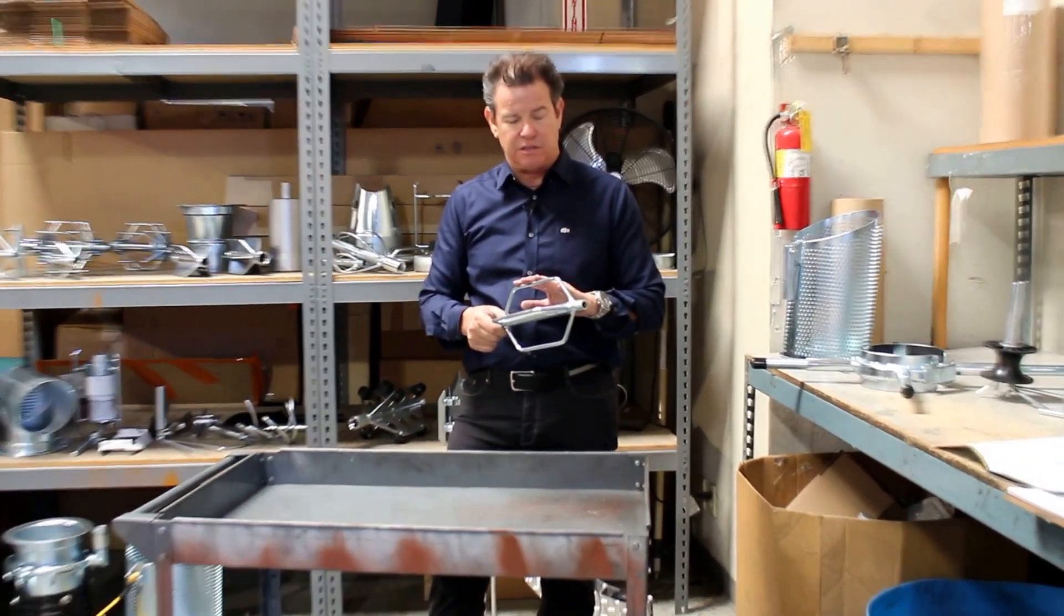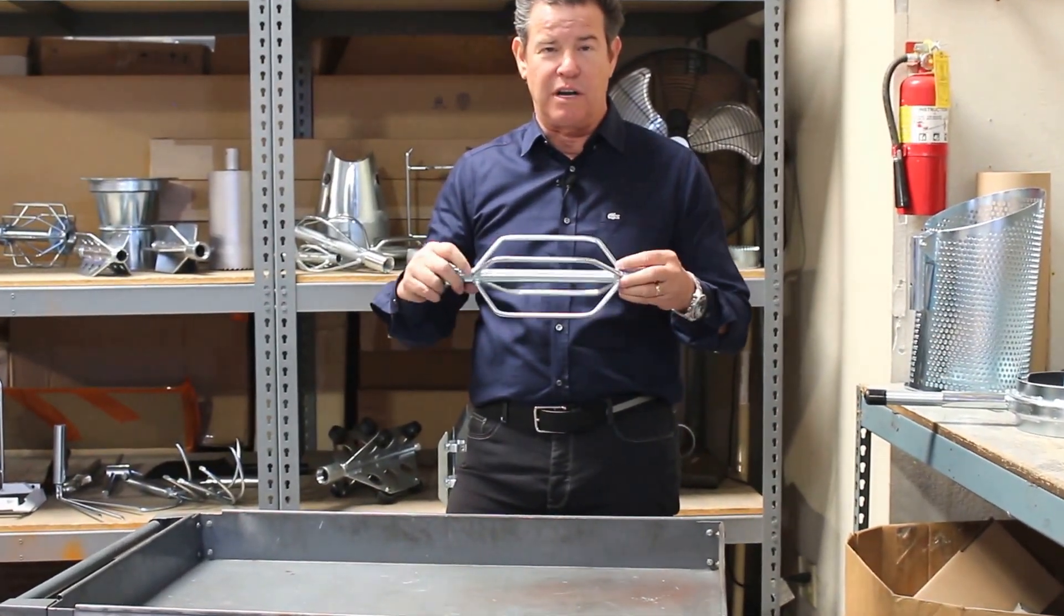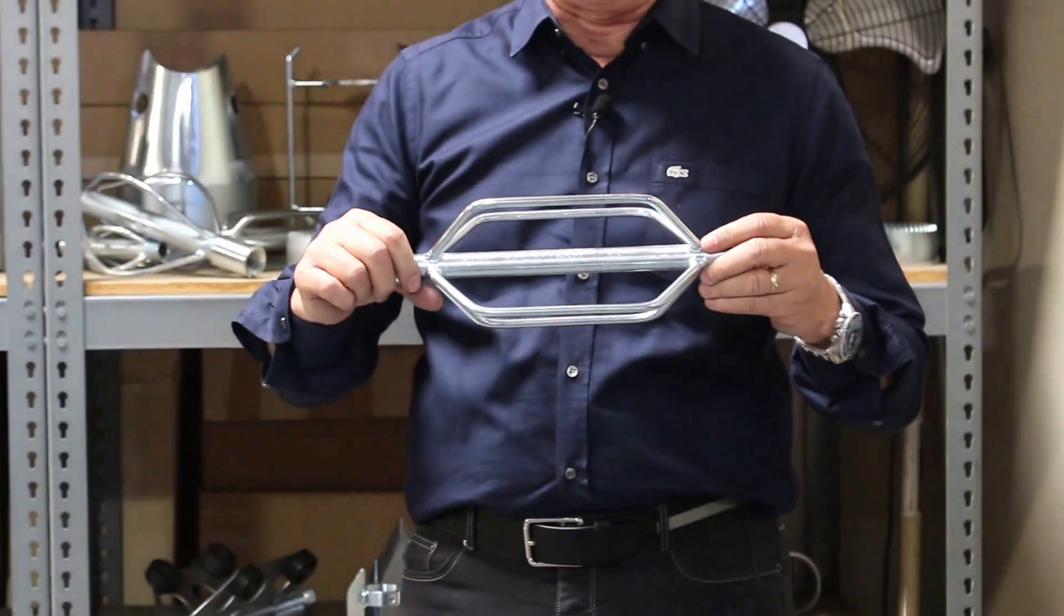The runners are spring steel, made five-sixteenths diameter, and this will keep your nozzle nice and centered down the line as it's going down.